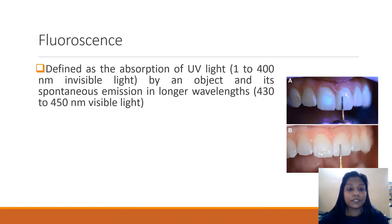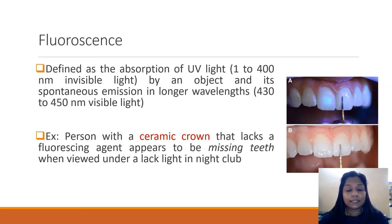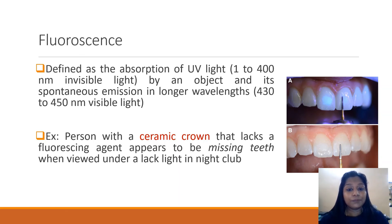The final phenomenon is fluorescence, defined as absorption of UV light (1 to 400 nanometer invisible light) by an object and its spontaneous emission in longer wavelengths (430 to 450 nanometer visible light). An example is a person with a ceramic crown who may appear to have no teeth in a nightclub setting, because natural tooth structure absorbs short light wavelengths and emits them in longer wavelengths, appearing fluorescent.